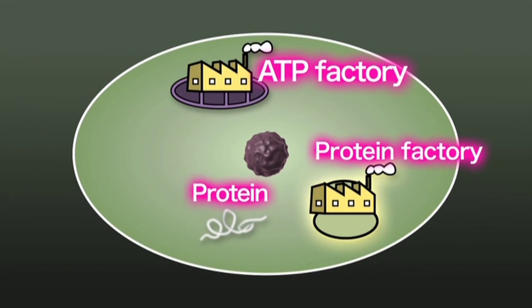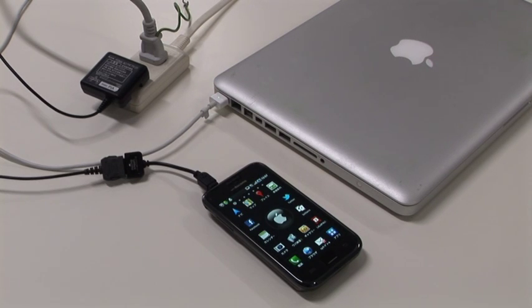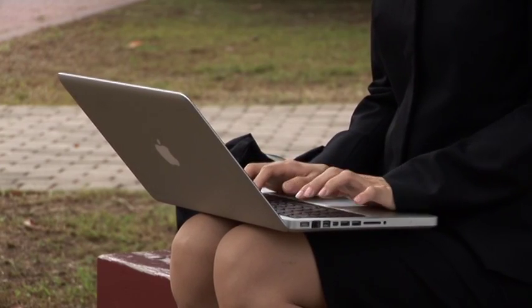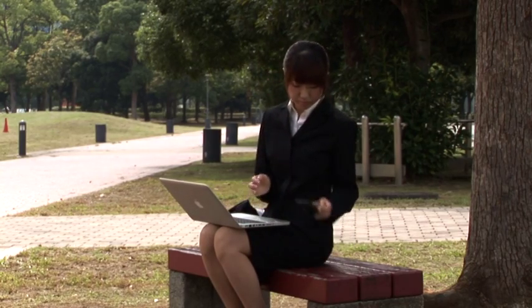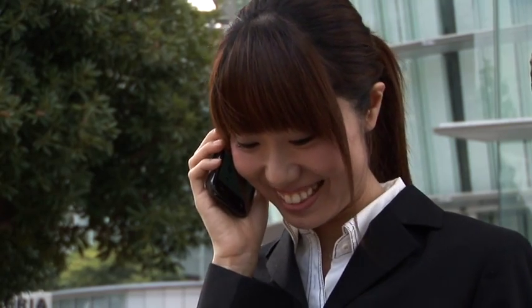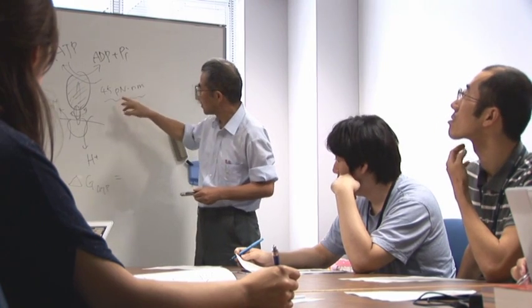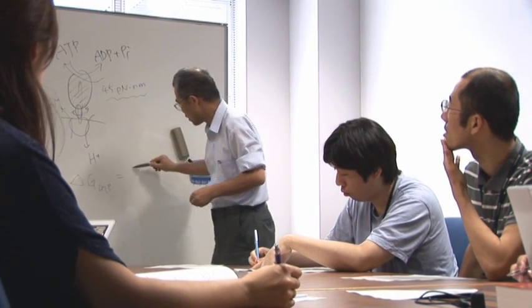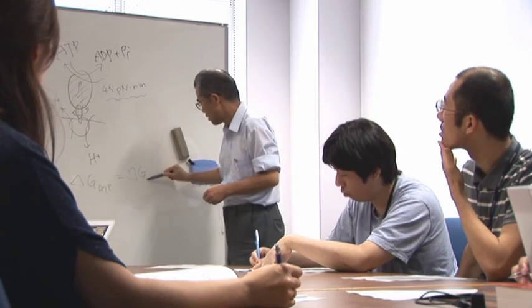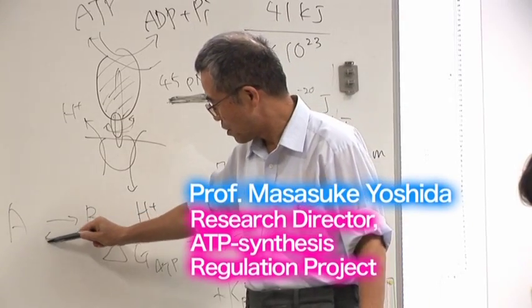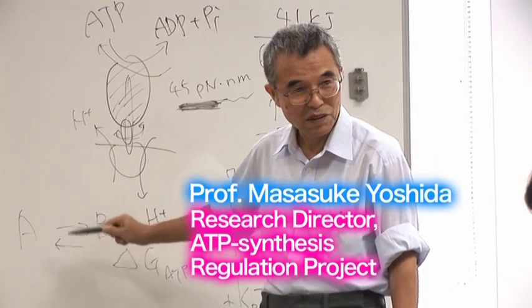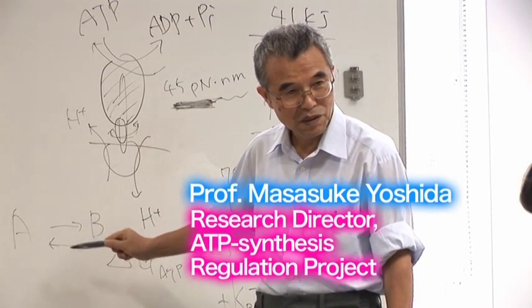We carry batteries around that can easily be used when required. In a similar way, cells extract energy from ATP molecules according to their needs. The factory in mitochondria generating ATP is actually an enzyme called ATP synthase. It plays an extremely critical role because it is responsible for generating the energy required to maintain life. Since the 1990s, the mechanism and action of ATP synthase have been elucidated by a group led by Professor Yoshida of Kyoto Sango University.